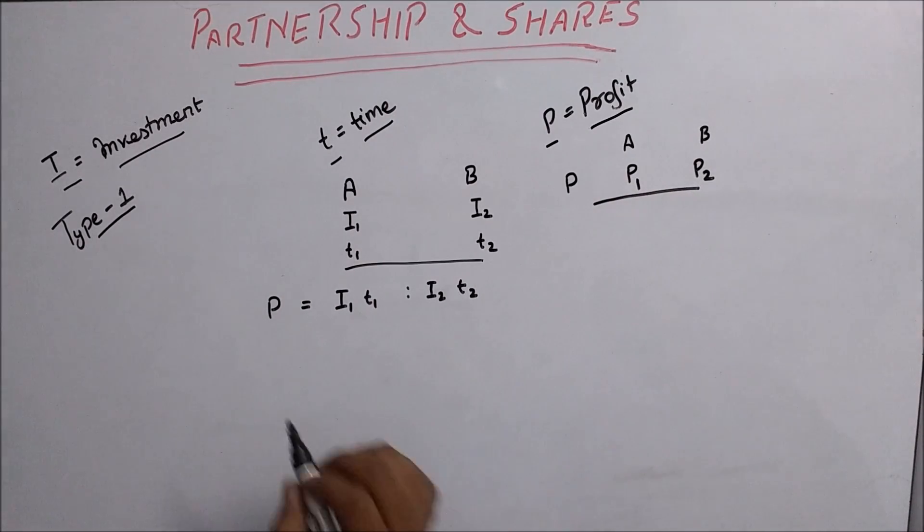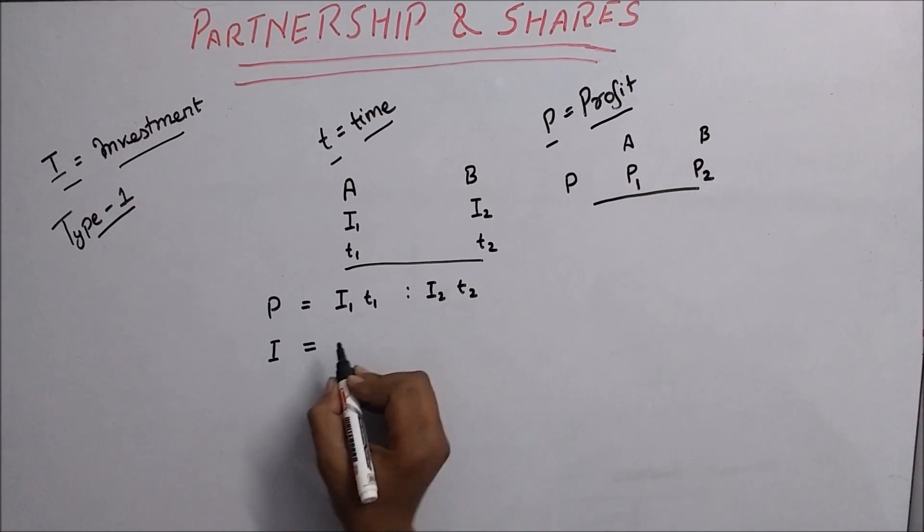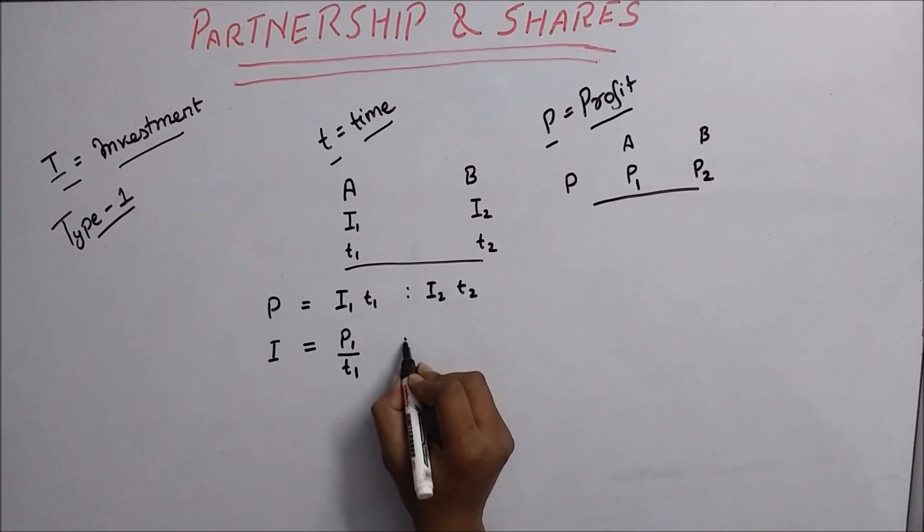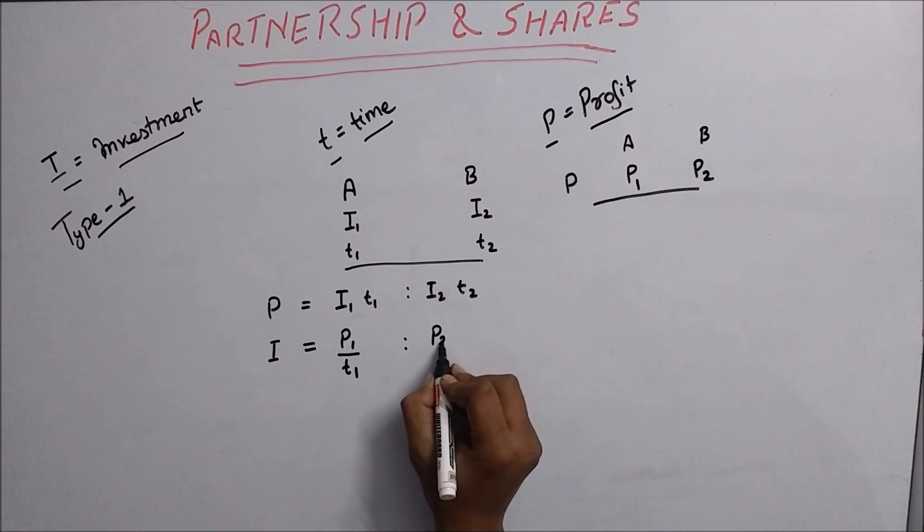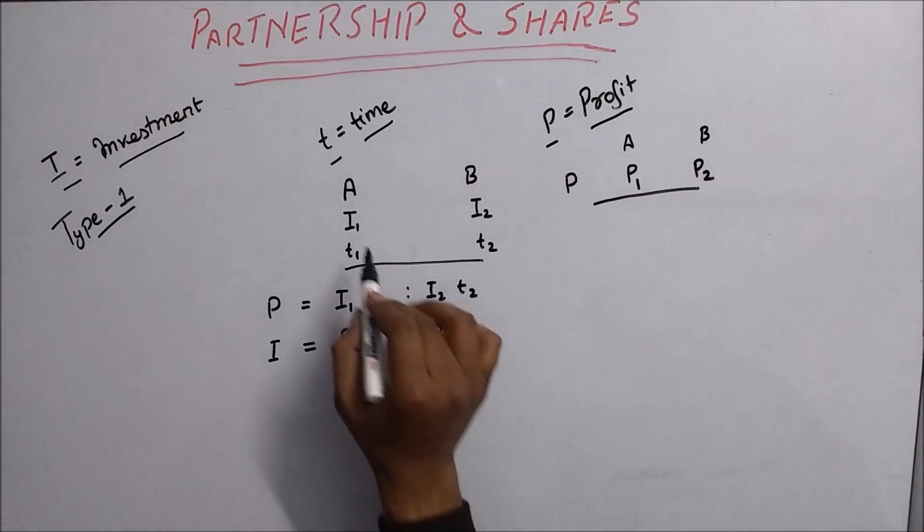Now if in the question profit and time are given for A (P1, T1) and for B (P2, T2), and you need to calculate investment, then it is P1 divided by T1 ratio P2 divided by T2.